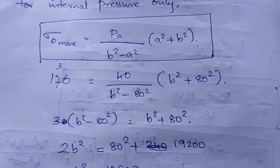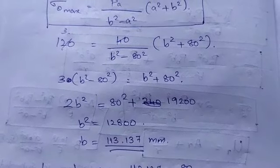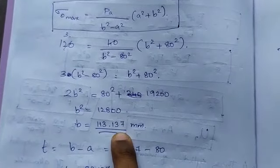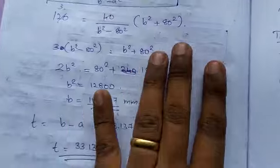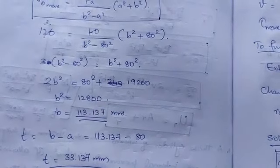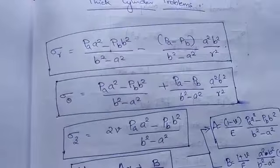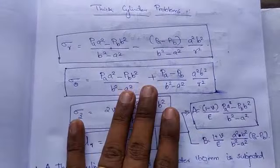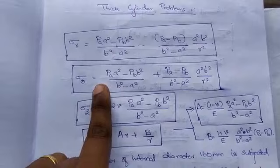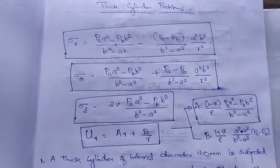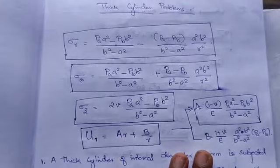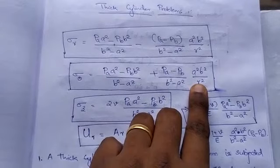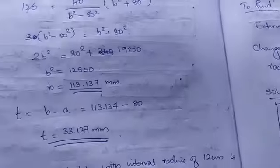From that equation with p_a and sigma_theta_max known, we can solve for b. You get b = 113.137 mm. Thickness t = b − a, which is a straightforward calculation. Note that sigma_theta_max here neglects the p_b term since there is no external pressure, and is evaluated at r = a.